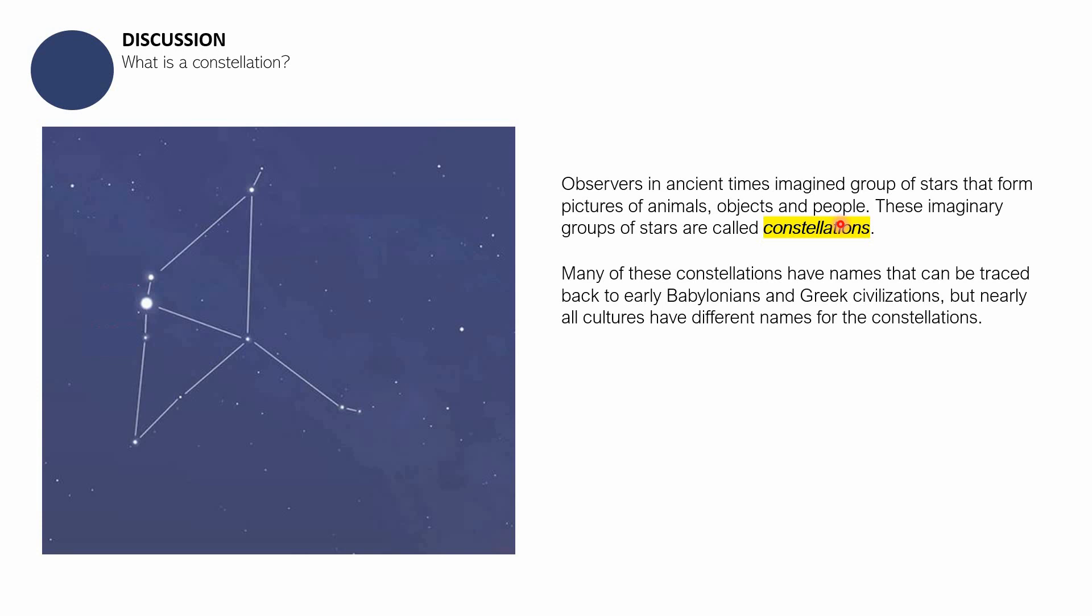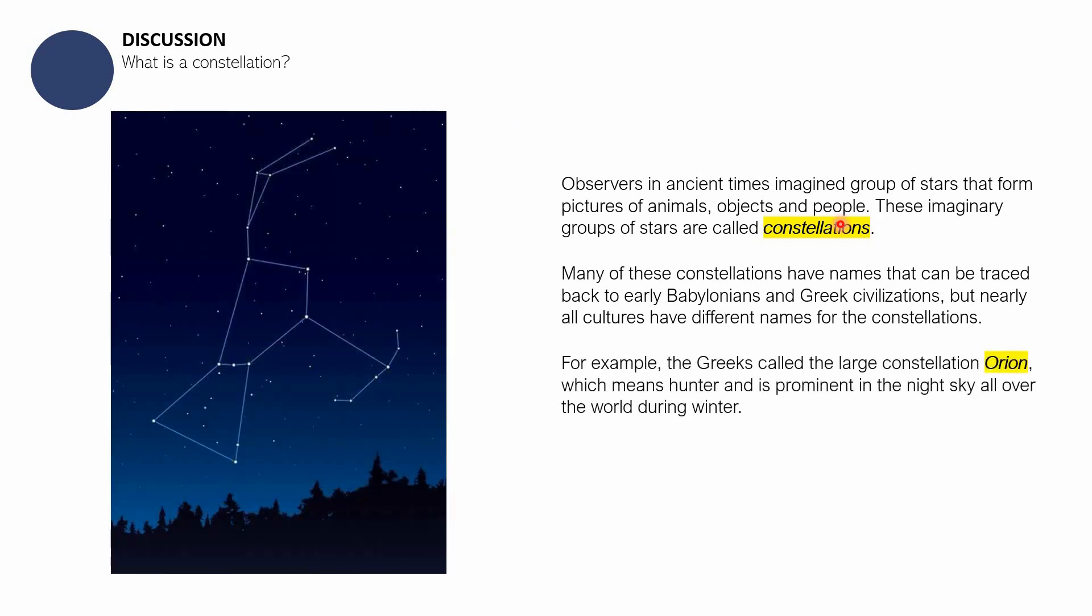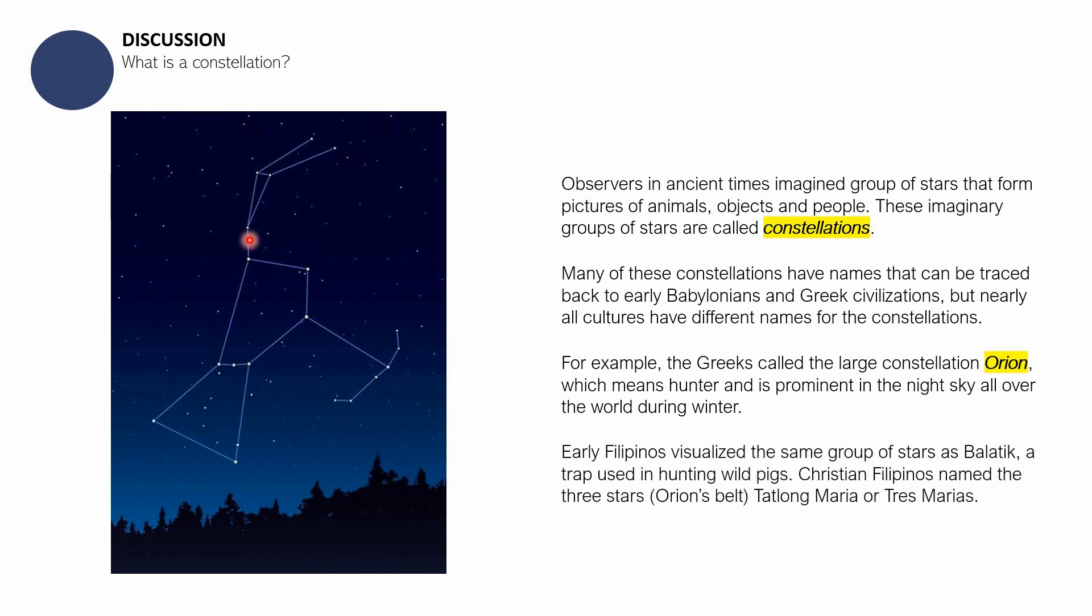Kahit na hindi pa uso ang internet before, meron na tayong mga common denominators talaga as humans, and that is looking for patterns in the sky. The Greeks called this large constellation Orion, which means the hunter, and it is prominent in the sky all over the world during winter. It is a very large constellation. Pero yung mga early Filipinos, para sa mga Greeks, this constellation is a Greek hunter. Pero para sa mga early Filipinos, we visualize almost the same group of stars as Balatik.